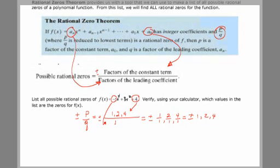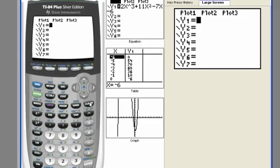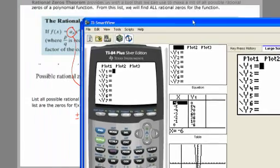Right now, let's just verify using our calculator that the zeros for that function are actually in that list. Let's go to y equals, clear out what was already there, and let's type in this function.